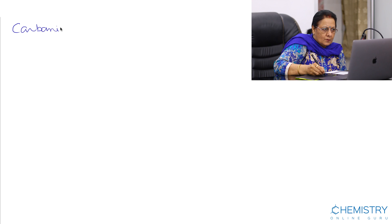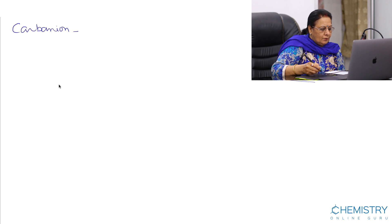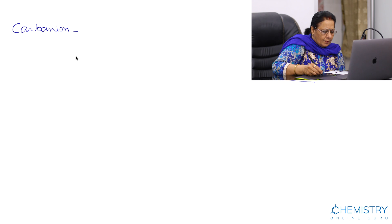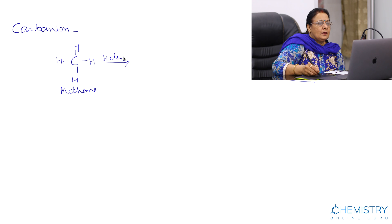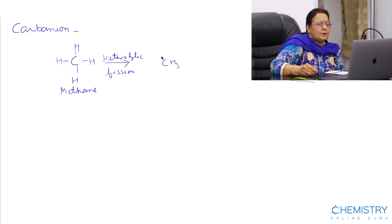Welcome to chemistryonline.guru. Today we will discuss carbanions. When a covalent bond in which carbon is attached to a less electronegative atom breaks up by heterolytic fission, then carbon acquires a negative charge. For example, this is methane — carbon is attached to the less electronegative element hydrogen. By heterolytic fission, we get CH3 minus and a hydrogen ion.